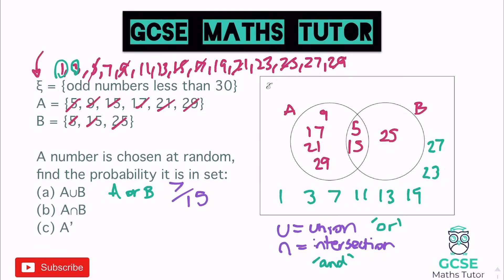Next is A∩B — the intersection of A and B, meaning numbers that are in A and B. There are only two numbers in both: 5 and 15. So the probability is 2 out of 15.